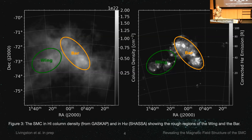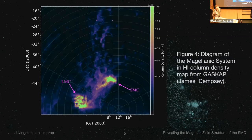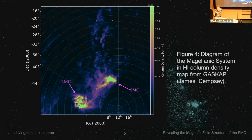The SMC is somewhere between 60 to 63 kiloparsecs away from us and has two major star formation regions: the wing and the bar, shown in the green and orange ellipses. The bar makes up the majority of the SMC star formation and mass. The wing of the SMC connects the SMC to the Magellanic Bridge running between the LMC and SMC, and is dominated primarily by tidal forces. The SMC itself is pretty messy, with an irregular shape and unknown path length estimated between 3 to 8 kiloparsecs.